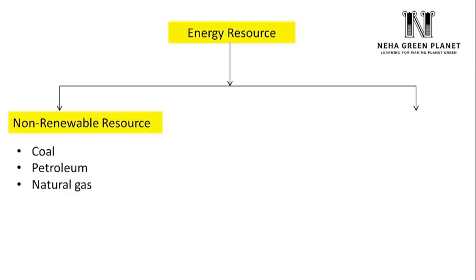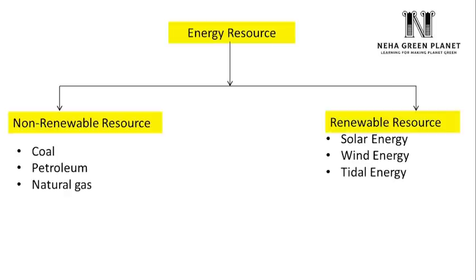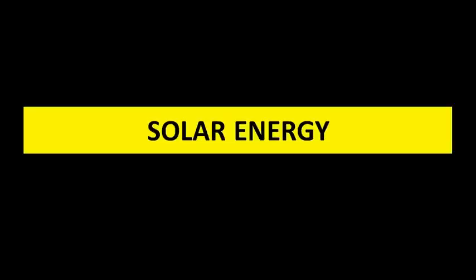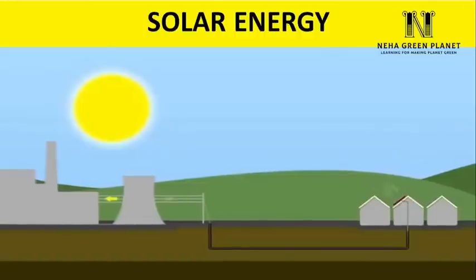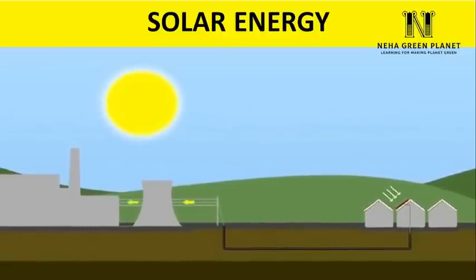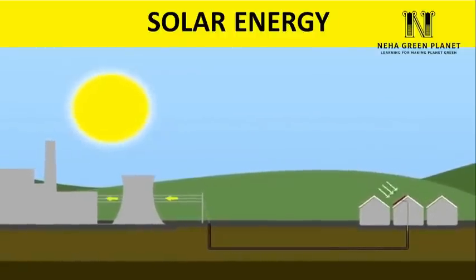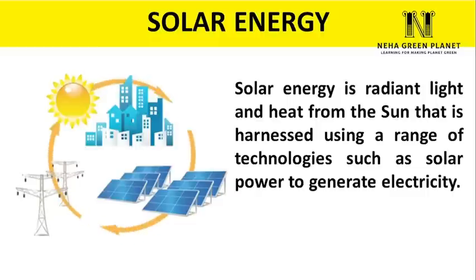Now that we know the environmental impact of coal, oil, and natural gas, it is important to analyze renewable energy resources. Renewable energy resources are unlimited and can be reused again and again. Main types include solar energy, wind energy, tidal, geothermal, ocean thermal, biomass, biogas, and hydropower. Solar energy is a type of renewable energy resource freely harnessed from sunlight, defined as the radiant energy and heat from the sun, harnessed using technologies such as solar power to generate electricity.